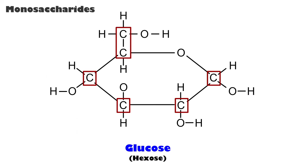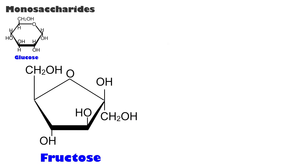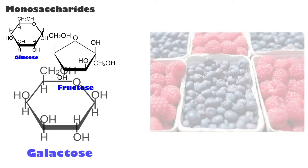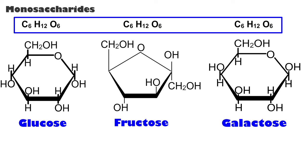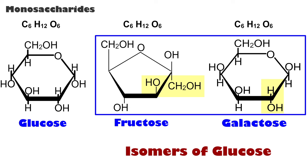Glucose, a 6-carbon sugar (hexose), is the sugar in our blood. Fructose, the sugar that sweetens fruit, and galactose, the sugar found in milk, have the same chemical formula as glucose and are therefore isomers of glucose. Isomers have the same composition but have a different arrangement of their atoms and properties.